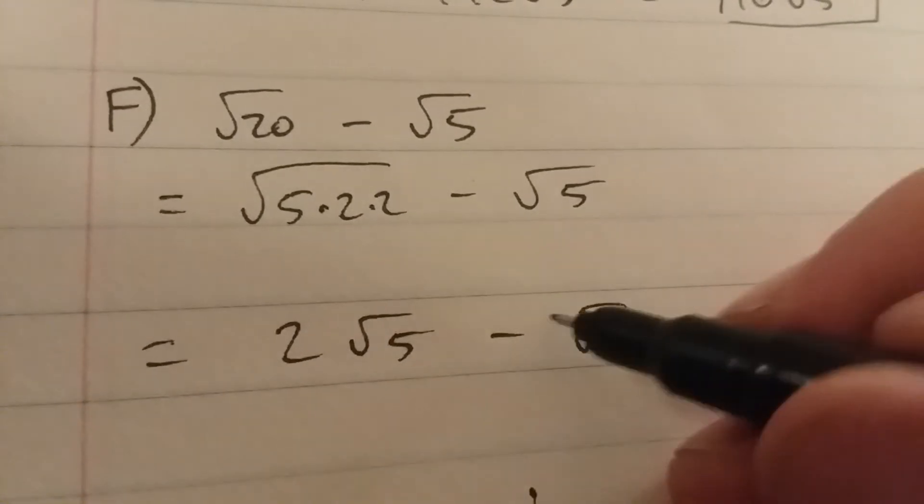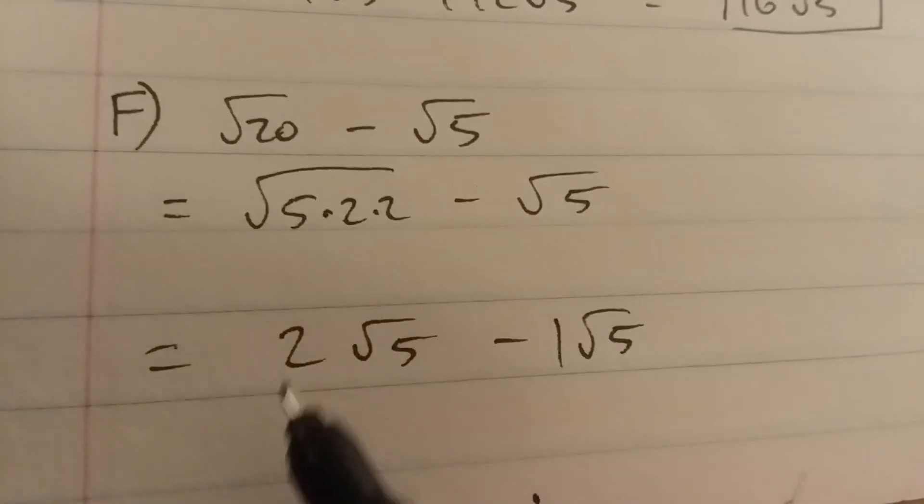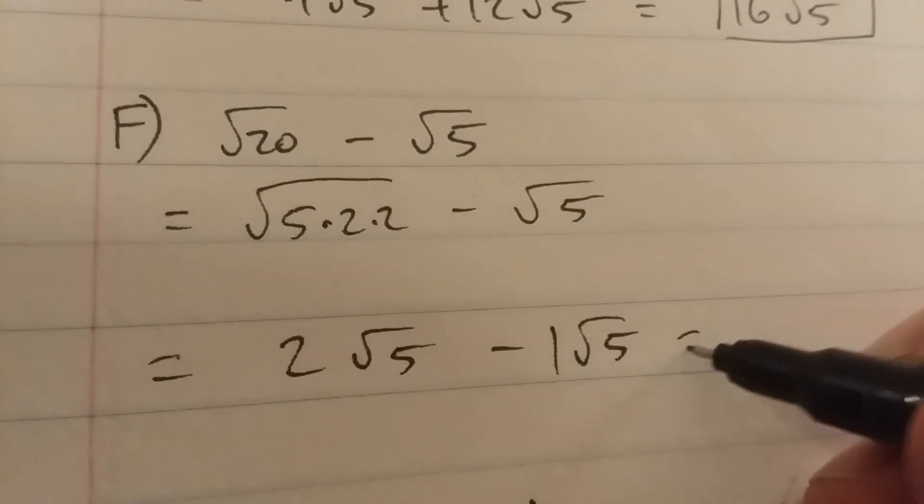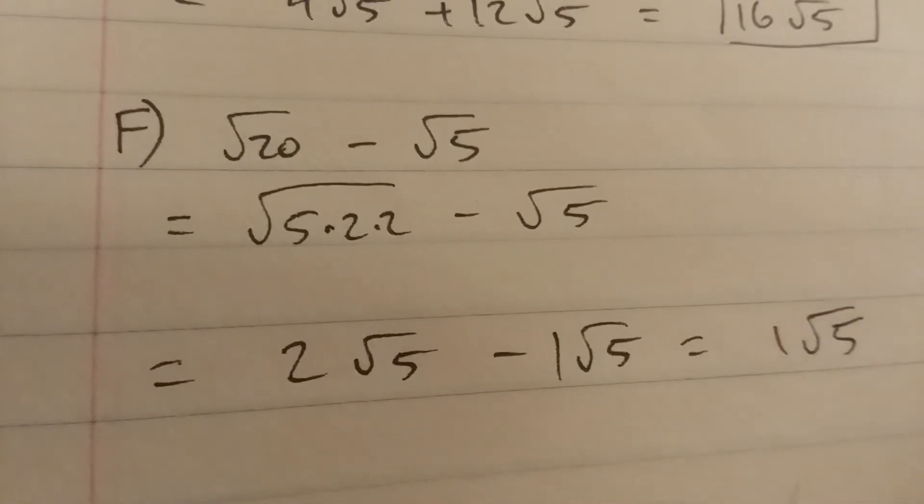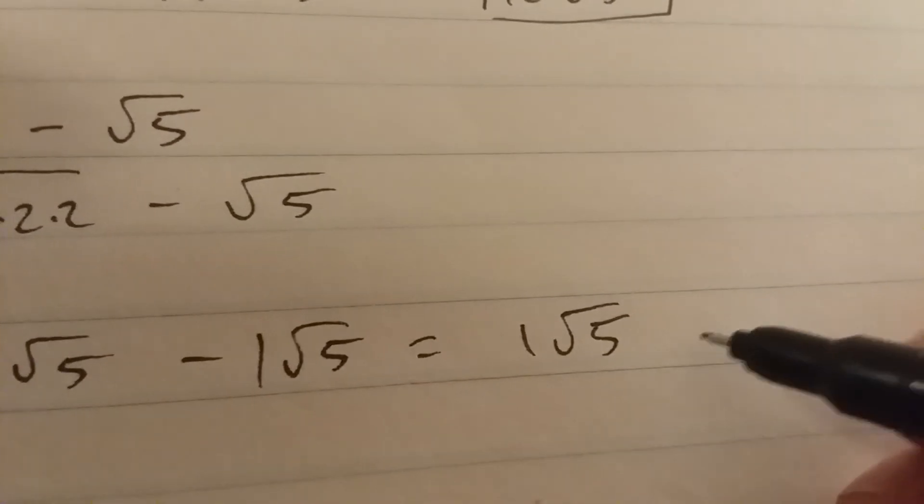Now the square root of 5 is the same thing as 1 root 5. Subtract your coefficients, 2 minus 1 is just 1, so you have 1 root 5, which is the same thing as the square root of 5.